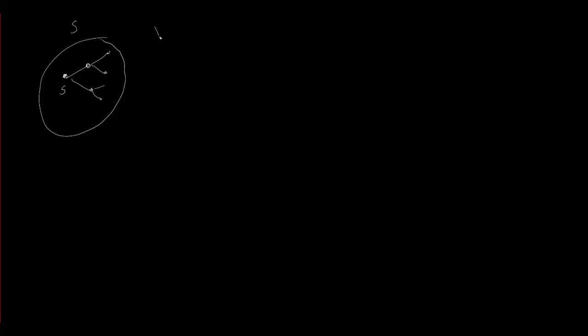Suppose we have a tree already being built. We create a cut that includes all the edges in that tree — that is S — and V minus S is everything else. We pick the edge of minimum weight across the cut, edge E, and add it to our current minimum spanning tree. We always keep a connected tree and incrementally add edges.